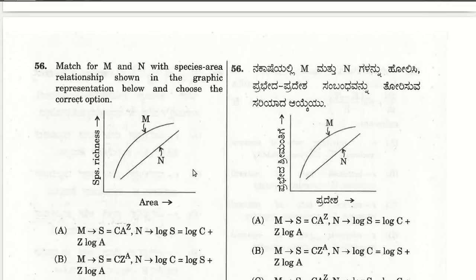The fifty-sixth question: match M and N with the species-area relationship graphs. M represents S = CA^Z and N represents log S = log C + Z × log A. These are the correct equations for the species-area richness graphs.